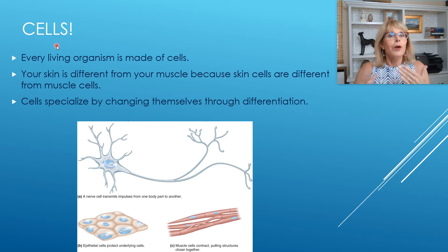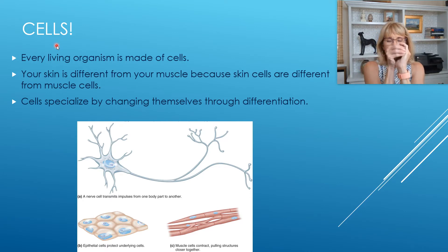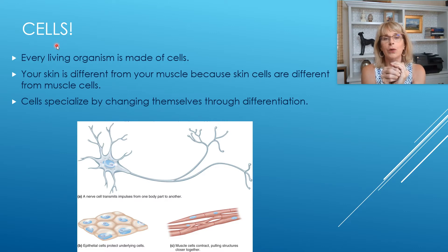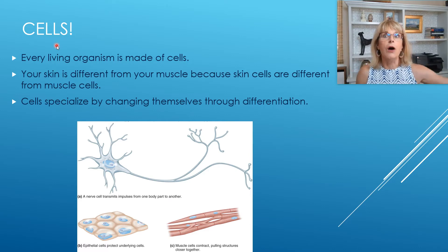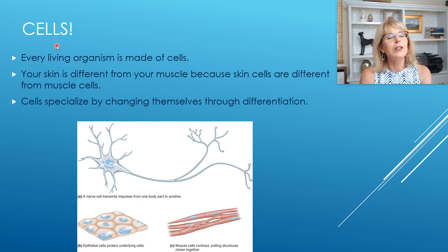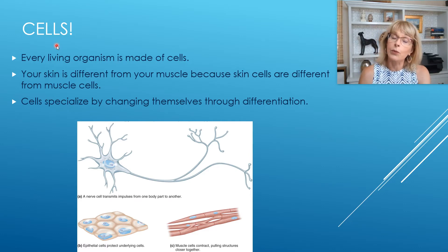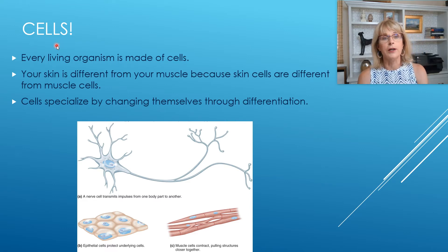Here on planet Earth, if you want to be a living cell, you want to be something tiny so you can control what's inside of you. You don't want to try to organize and control all of planet Earth or all of the Pacific Ocean. So we think that every living organism — not just here on Earth, but anywhere we might run into life — should be made out of something like a cell.